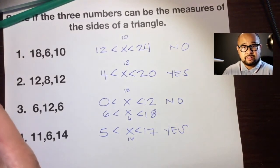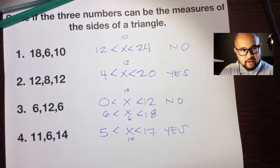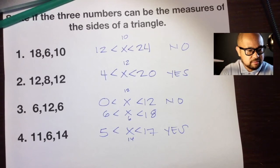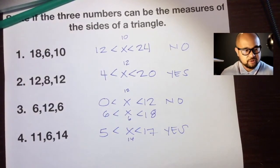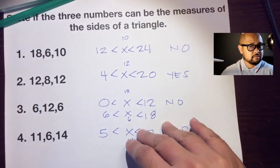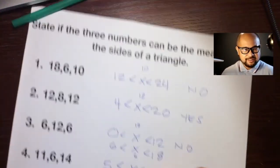That's the Triangle Inequality Theorem. Just remember two things: to get the maximum, you add — but it has to be less than that number. To get the minimum, you subtract — but it has to be greater than that number. It can't be equal — less than for the maximum, greater than for the minimum. Add and subtract. That's the Triangle Inequality Theorem. Have a great day.